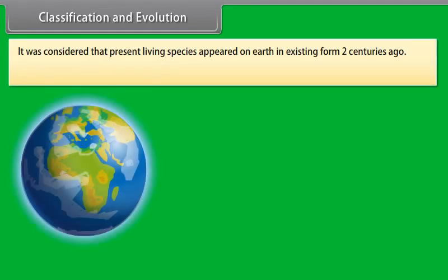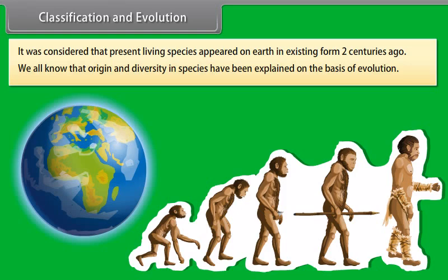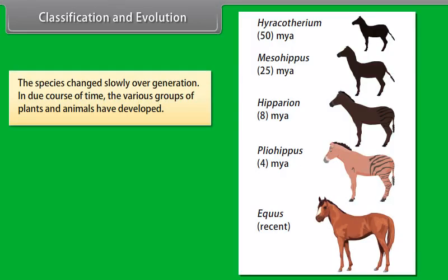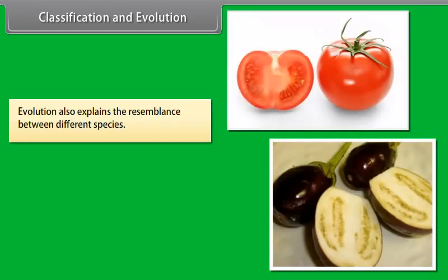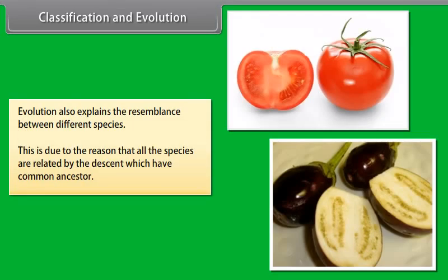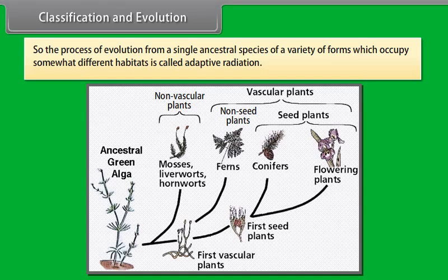It was considered that present living species appeared on earth in their existing form two centuries ago. We know that the origin and diversity in species have been explained on the basis of evolution. Species change slowly over generations, and in due course of time various groups of plants and animals have developed. As a result, many different species evolved, each adapted for a particular environment. Evolution also explains the resemblance between different species, as all these species are related by descent from a common ancestor. The process of evolution from a single ancestral species into a variety of forms occupying different habitats is called adaptive radiation.